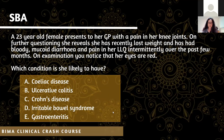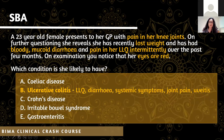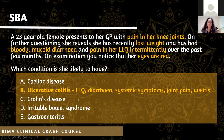Second SBA. Most people went for option B, which is great. This was another case differentiating between ulcerative colitis and Crohn's disease. Here we have a female presenting with knee joint pain, weight loss, bloody mucoid diarrhoea, and pain in the left lower quadrant - not on the right like before. It's intermittent, and she has red eyes. This is quite a classic presentation of ulcerative colitis.